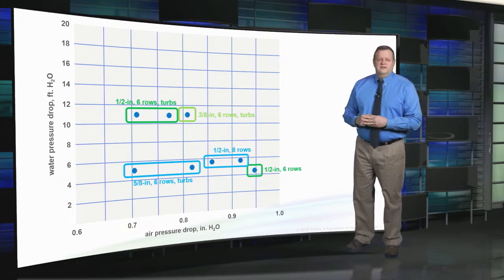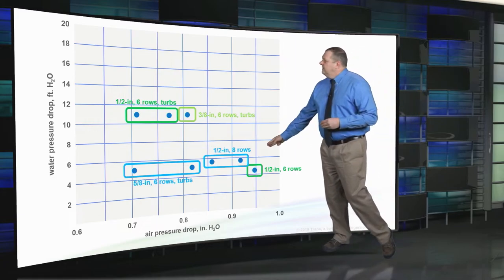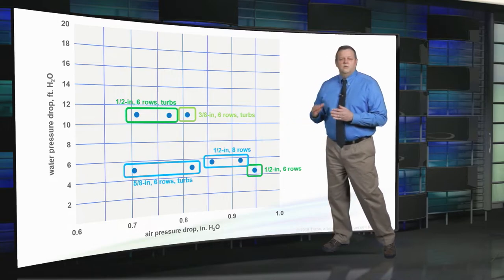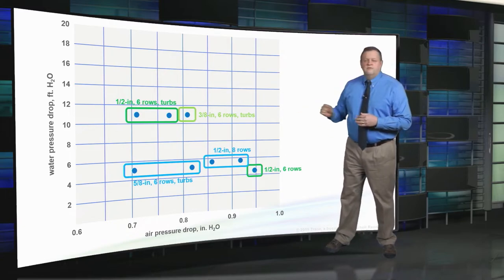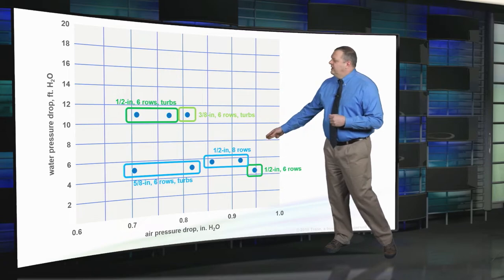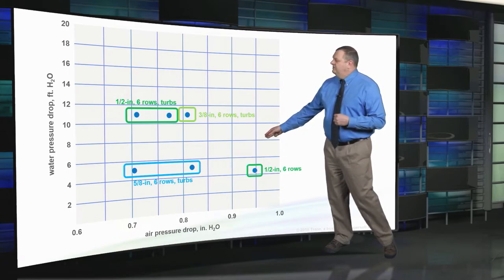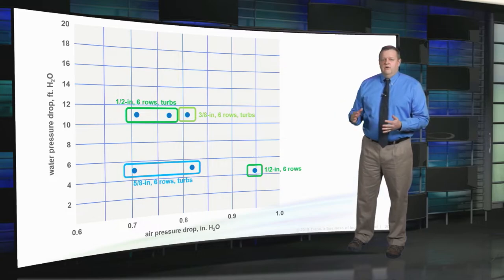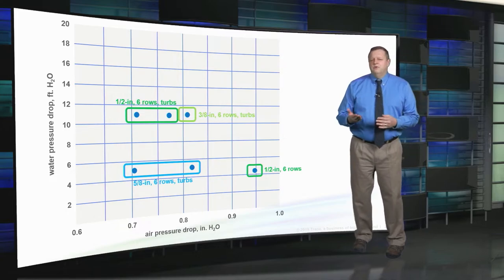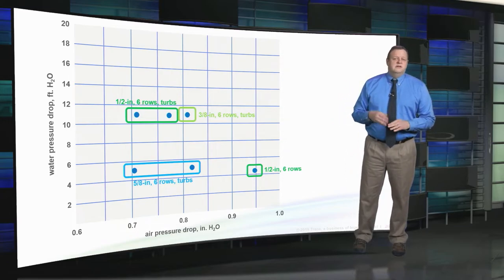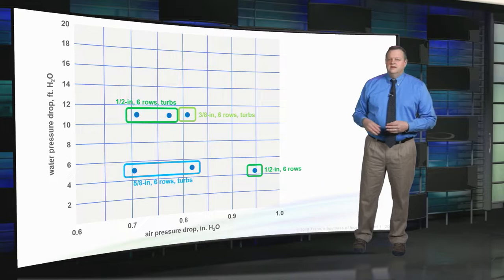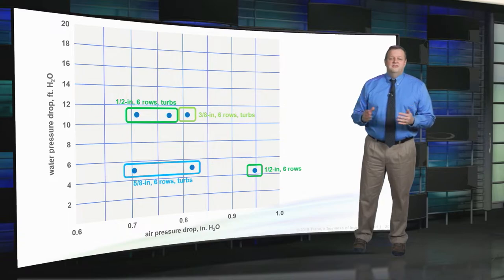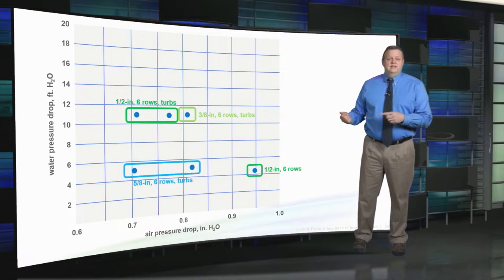After removing the less cost-effective 8-row options, all the red options are gone. For this application at a 15 degree delta T, the added cost of an 8-row coil is not warranted. When you add more rows to a coil in an air handler, not only does the coil get more expensive, but the air handler usually has to get longer, adding casing cost as well. This example walks through the process — I'm not saying 8-row coils are never warranted; they certainly have a place in higher delta T systems.